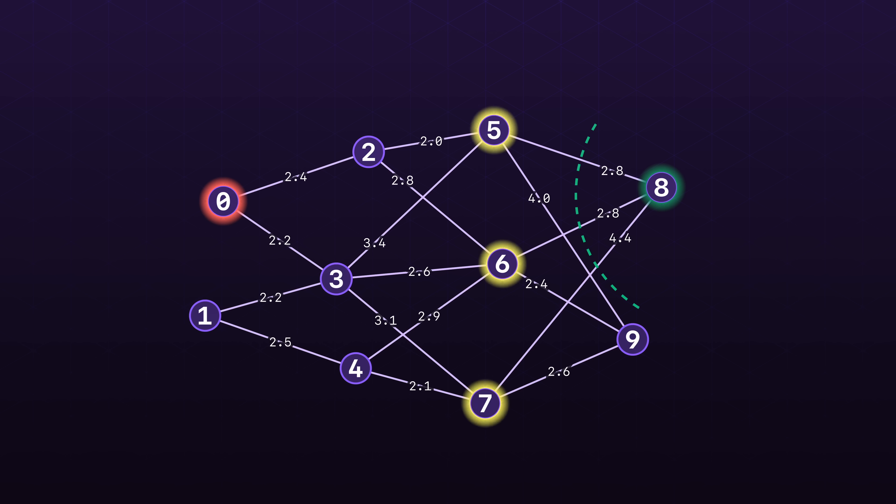We know the optimal path has to eventually reach the goal state. Looking at the goal state, there are three options of reaching there from adjacent nodes. Now let's say some high power tells us the optimal path to each of these nodes. Given this information, how would you decide what the optimal path is to the goal?